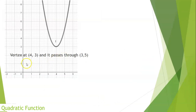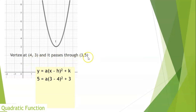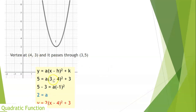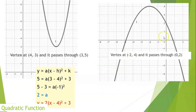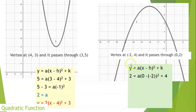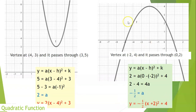Another example: vertex at (4, 3) passing through (3, 5). Substitute: 5 = a(3 − 4)² + 3 → 5 = a + 3 → a = 2. The equation is y = 2(x − 4)² + 3. Last example: vertex at (−2, 4) passing through (0, 2). Substitute: 2 = a(0 − (−2))² + 4 → 2 = 4a + 4 → a = −1/2. The equation is y = −(1/2)(x + 2)² + 4.